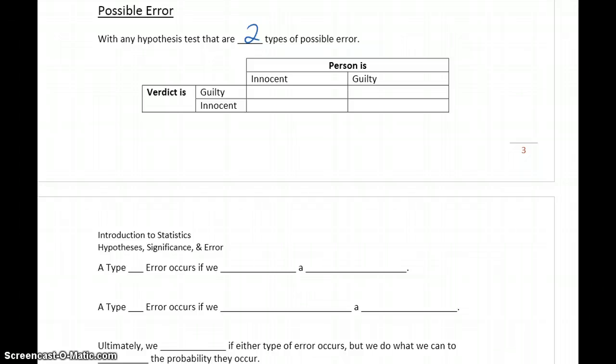That idea is similar to our null and alternative hypotheses. A person is innocent, so we start off with the null hypothesis that a person is innocent unless there's enough evidence to force us to throw that assumption out and decide that they're guilty, which would be our alternative hypothesis.